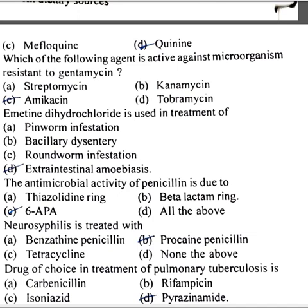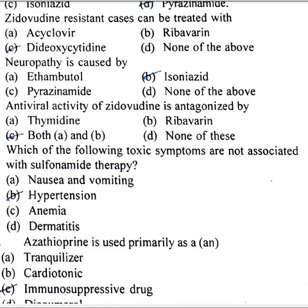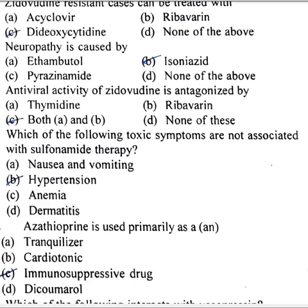Emetine dihydrochloride is used in treatment of extra-intestinal amoebiasis. The antimicrobial activity of penicillin is due to 6-APA. Neurosyphilis is treated with benzathine penicillin. Drug of choice in treatment of pulmonary tuberculosis is pyrazinamide. Zidovudine-resistant cases can be treated with dideoxycytidine. Neuropathy is caused by isoniazid. Antiviral activity of zidovudine is antagonized by thymidine and ribavirin. Which of the following toxic symptoms are not associated with sulfonamide therapy? Hypertension. Azathioprine is primarily used as an immunosuppression drug.